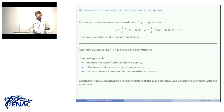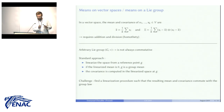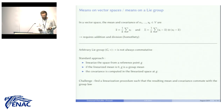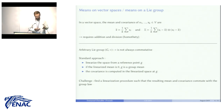If we take k points G_1, …, G_k on the group, the standard approach is to linearize the group from a reference point G. If the vectorial mean in this linearized space turns out to be zero, then we say that this reference point G is a group mean of the set G_1, …, G_k. The covariance is then defined as the vectorial covariance in this linearized space at the mean. The challenge is to find a linearization procedure such that the resulting mean and covariance commute with the group multiplication.